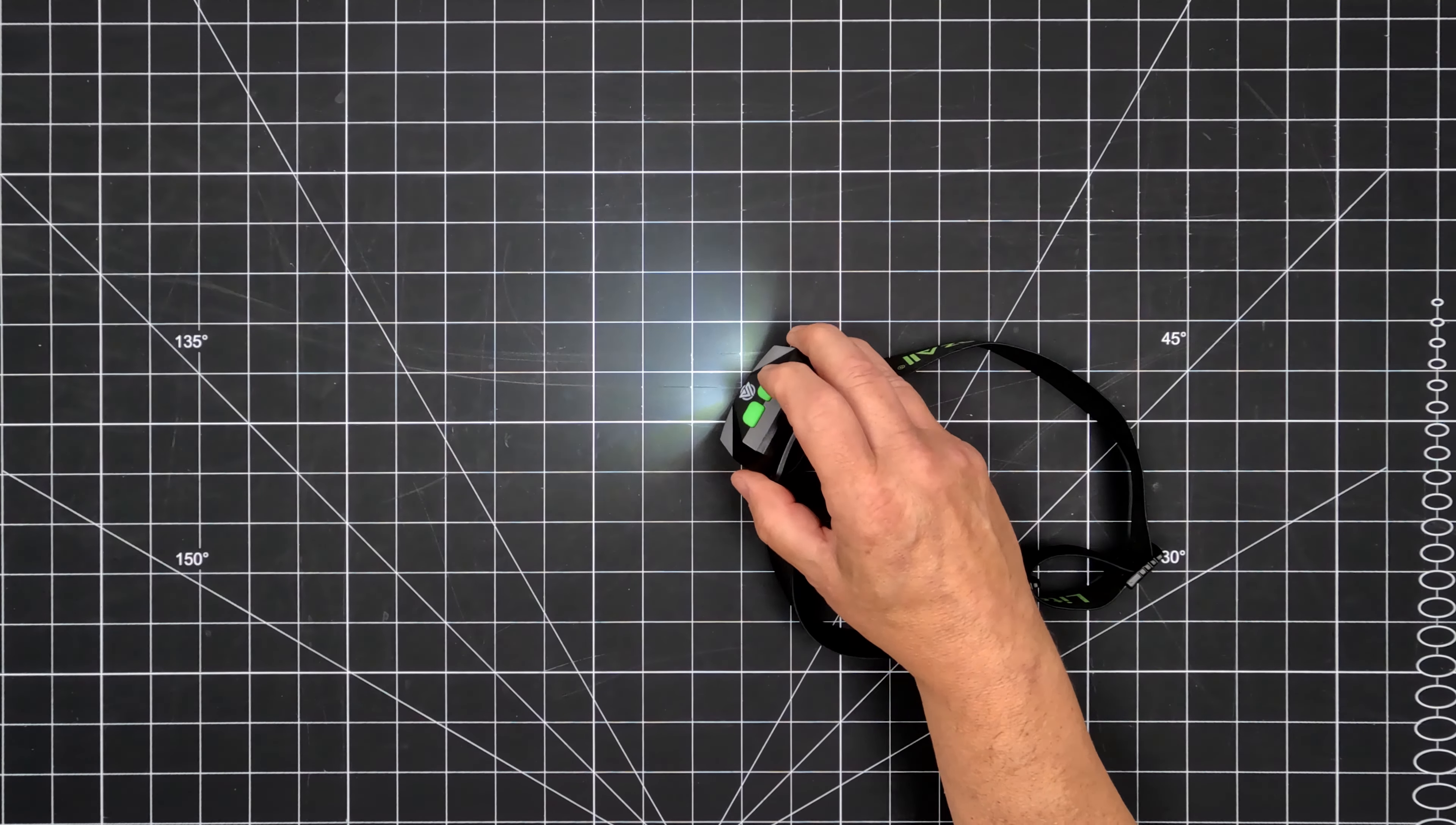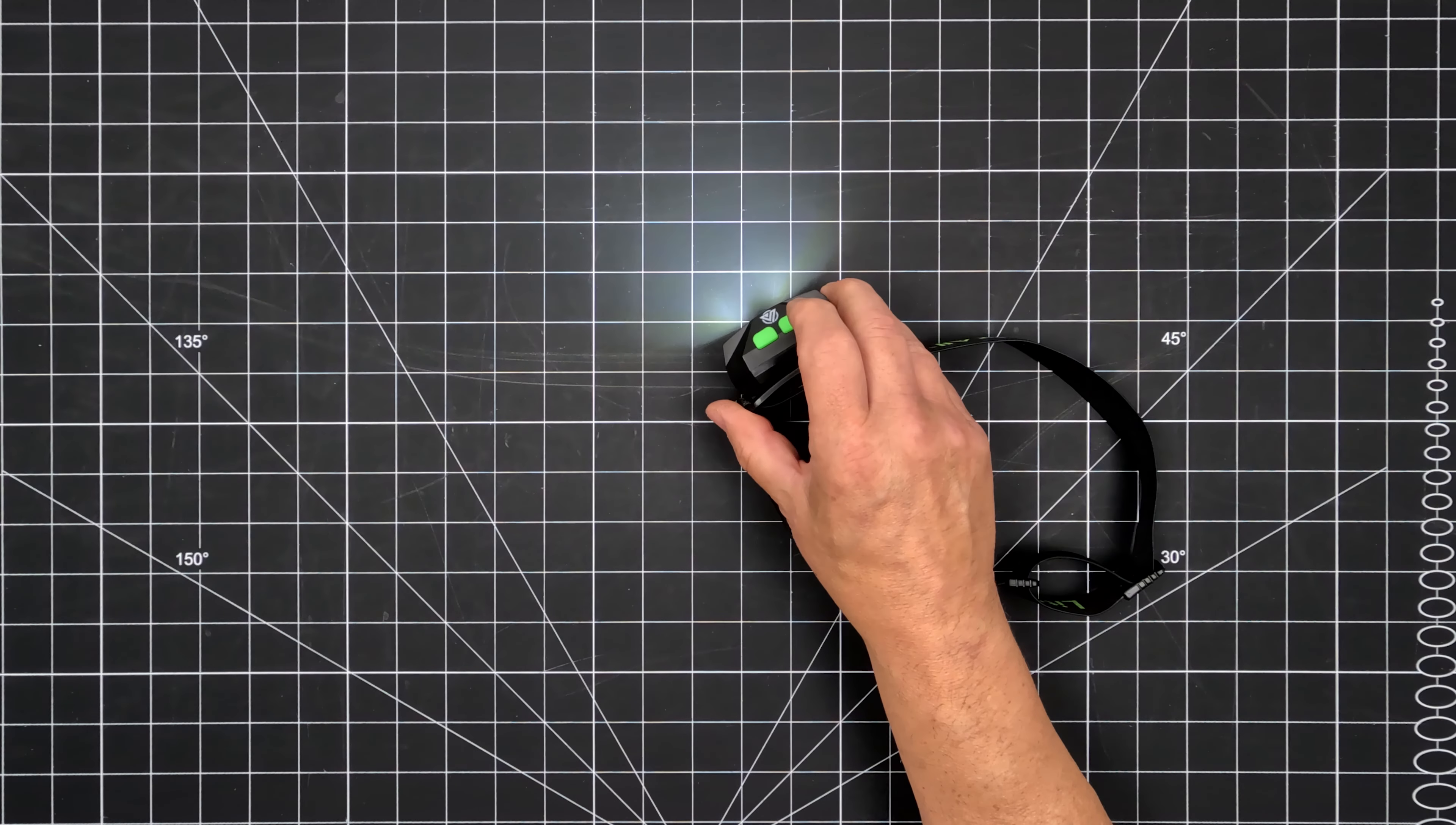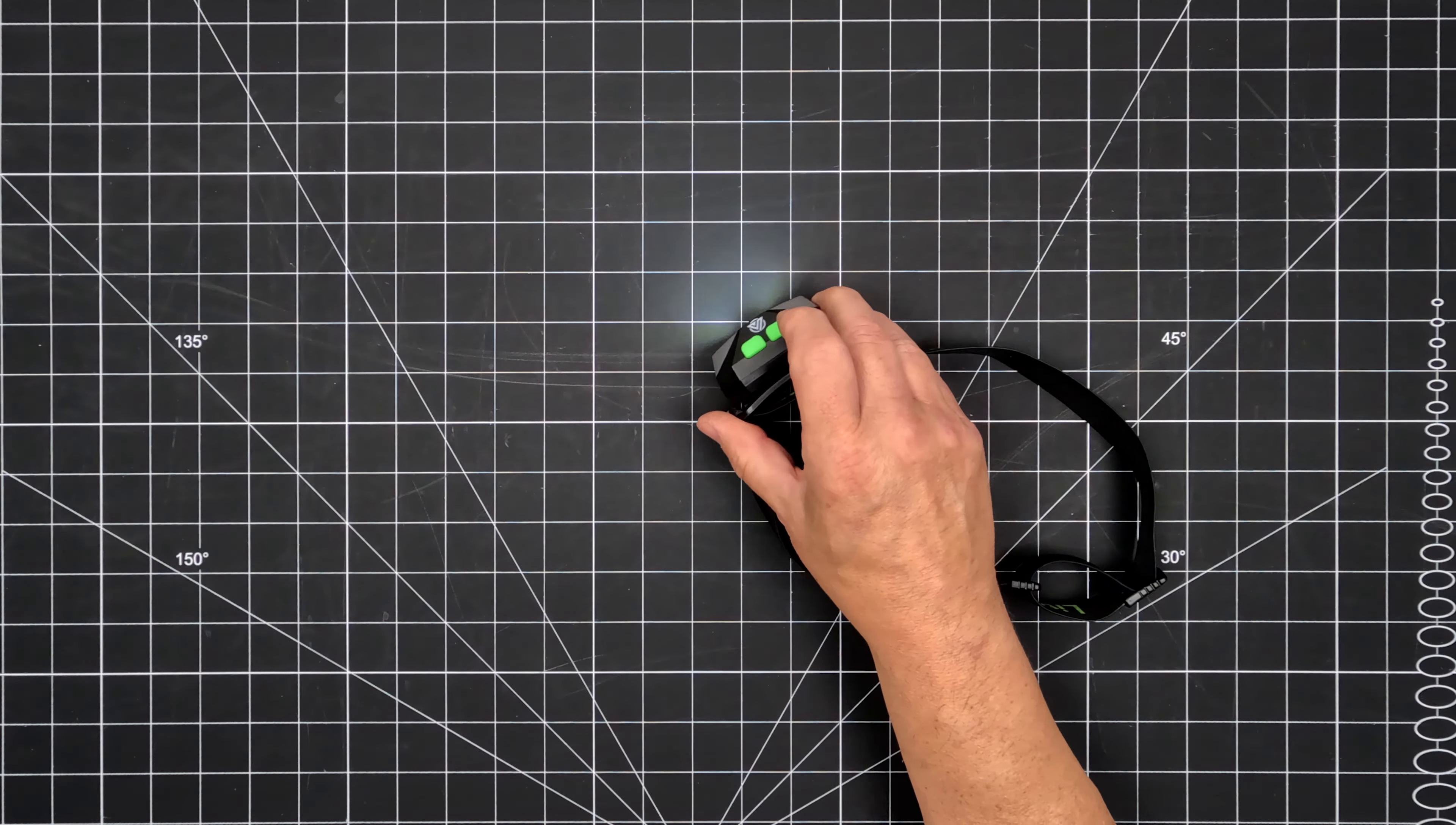High wide beam at 150 lumens with a 2.5-hour run time and a 66-foot light throw. And low wide beam at 50 lumens with a 10-hour run time and 33-foot light throw. Plus solid red and flashing red modes.